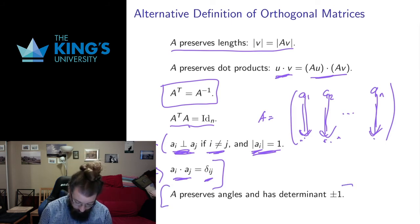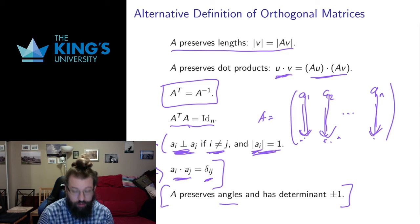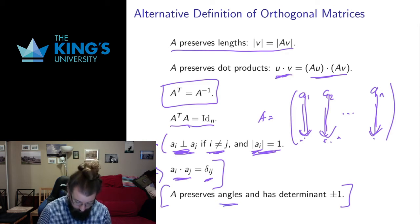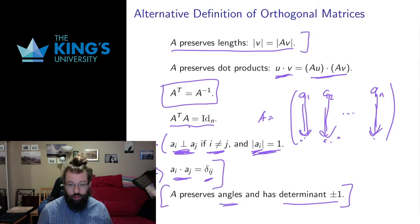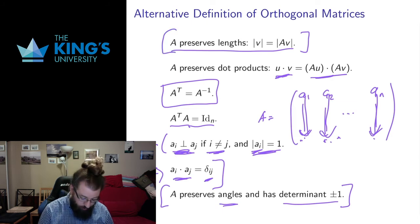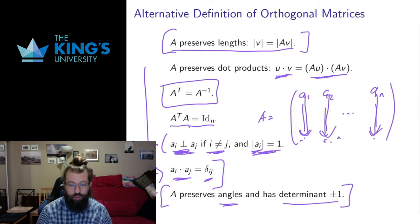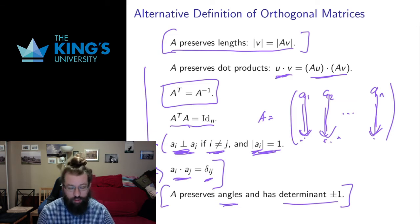Lastly, another preservation property: preserving angles is almost the same as preserving lengths, but not quite. An orthogonal matrix is one that preserves angles and also has determinant plus or minus one — and it turns out having both is equivalent to the original definition. It's really interesting that this orthogonality, this preserving of lengths, has a whole pile of alternative descriptions, and we can use all of these to our advantage in proofs and calculations.